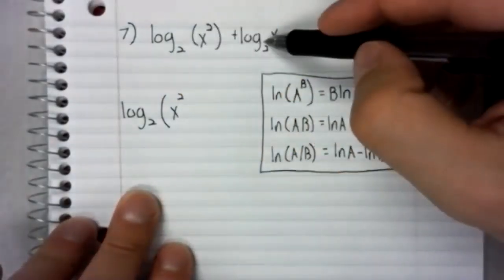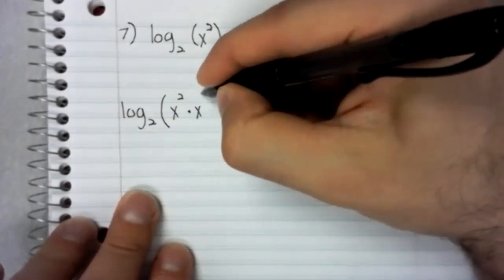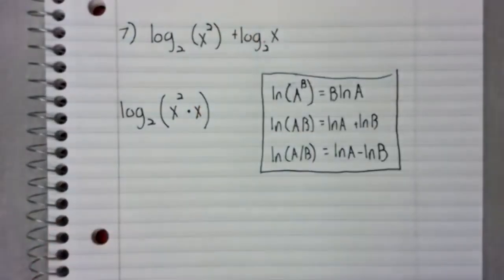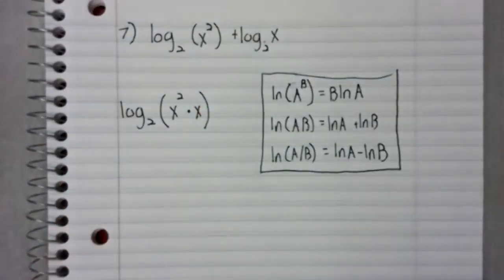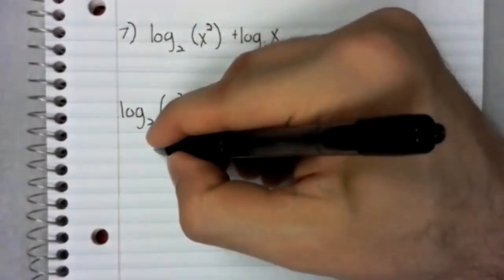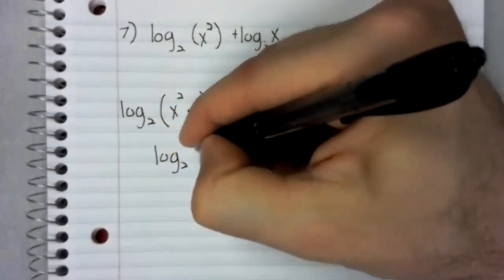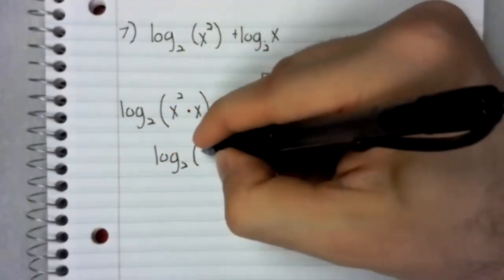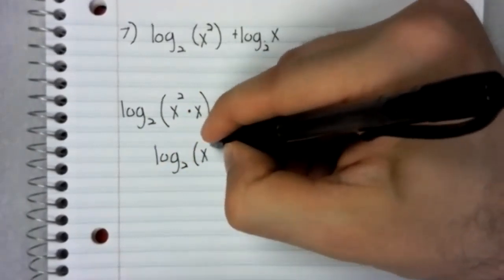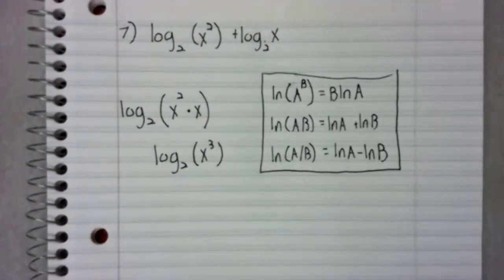The sum of logarithms is the logarithm of the product using this second rule. And x squared times x can be simplified as x cubed.